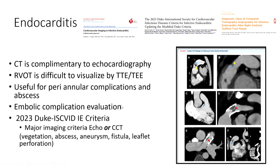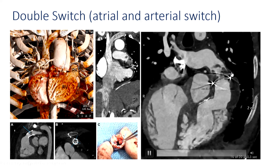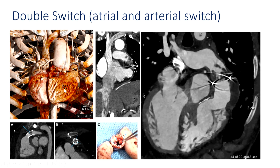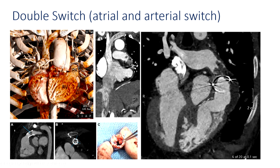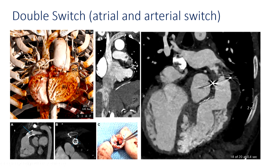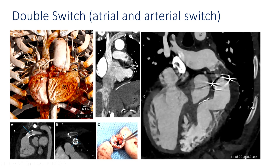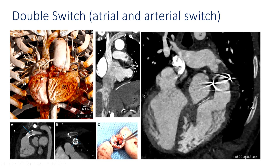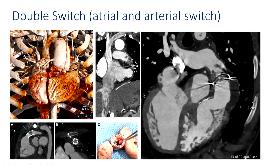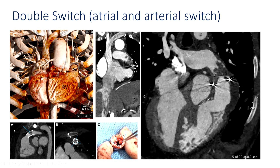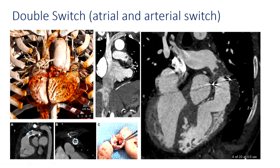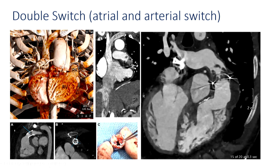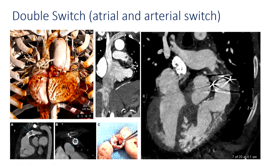In the updated infectious endocarditis criteria, it now states 'echo or CT,' so CT is now considered a major criterion. Here are examples: a patient with a double switch — right ventricle to pulmonary artery — whose echo looked okay, but CT showed pulmonary valve endocarditis with vegetations. Given where that pulmonary artery is diving down, you would not get good echo pictures. Another patient with a Melody valve shows the correlation between the CT image and what was found at surgery.